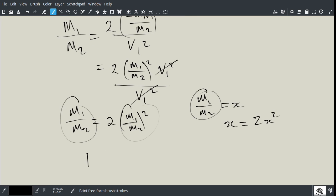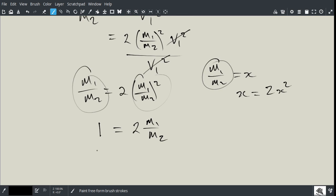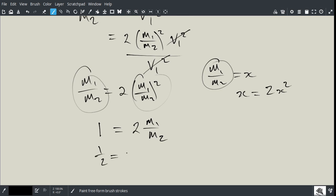So, this just becomes one equals two times, now this just becomes, the square disappears, so it becomes M1 over M2, and so now we can divide both sides by two, and we get the value we were looking for, which is the ratio of the two masses, and it's one half. So, that's how you solve this problem.